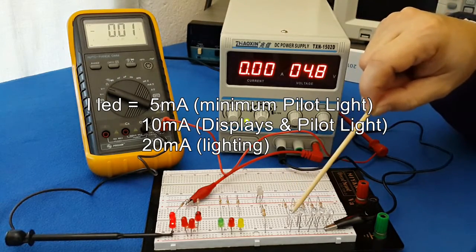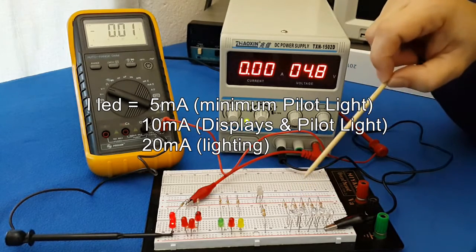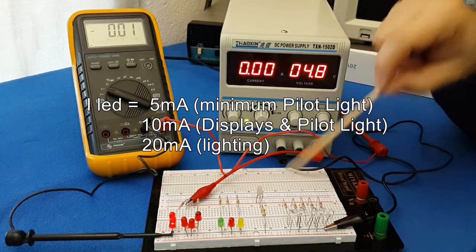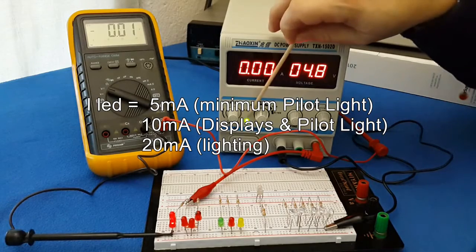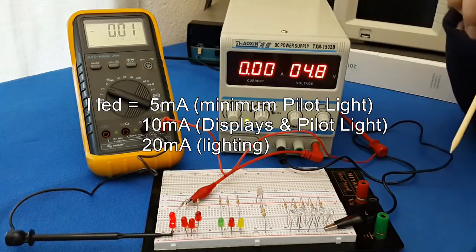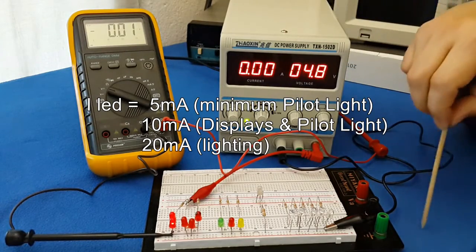If you want to use the diode as a light, go for the 20 milliamps. If you are going to use it just as a pilot indicator, you can go for the 5 milliamps to 10 milliamps.